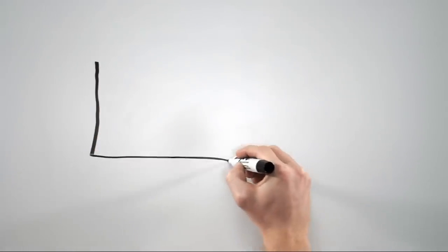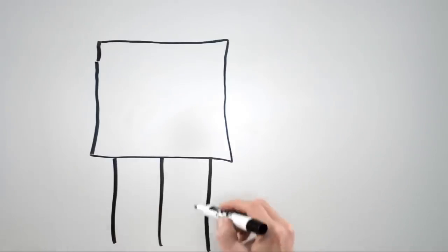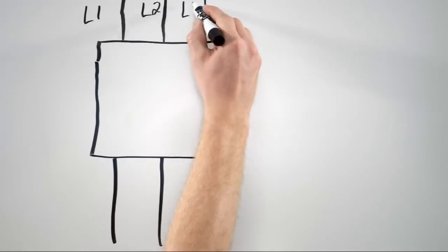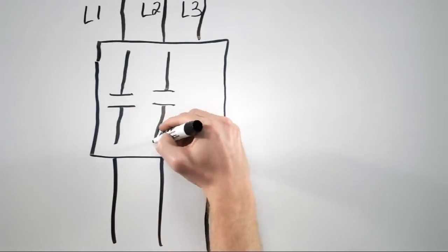Next, let's talk about auxiliary contacts. If we're looking at a contactor from the top down, we've got three phase power coming in the top, three contacts on the inside, one for each phase, and three phase power going out the bottom.